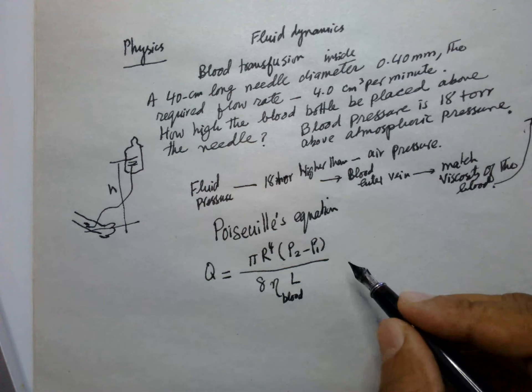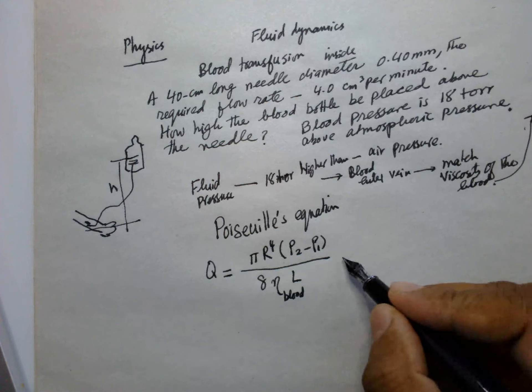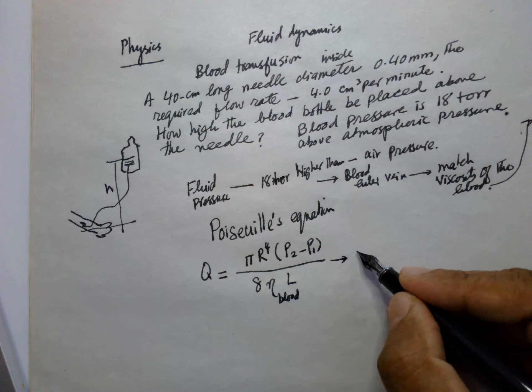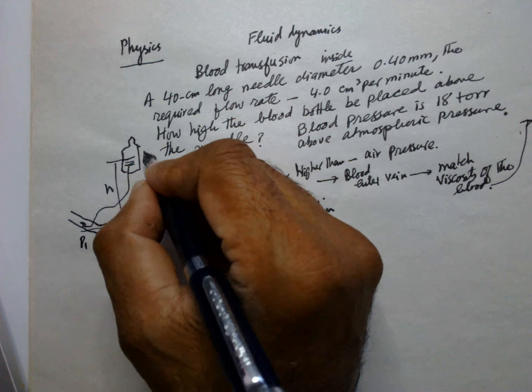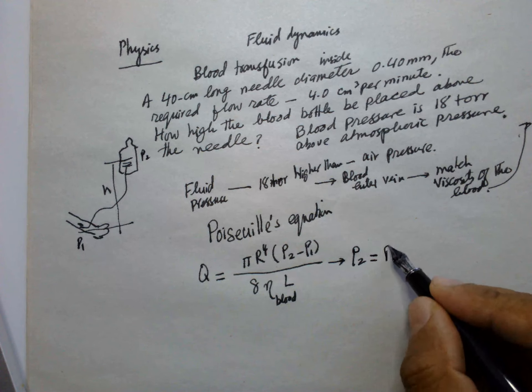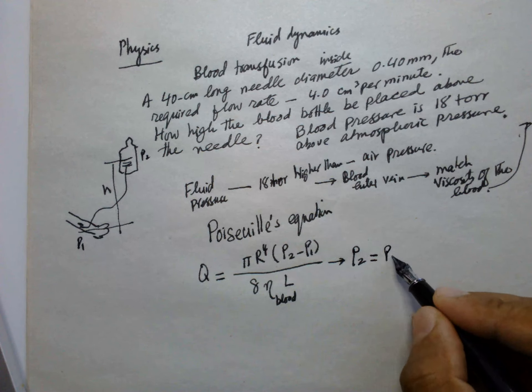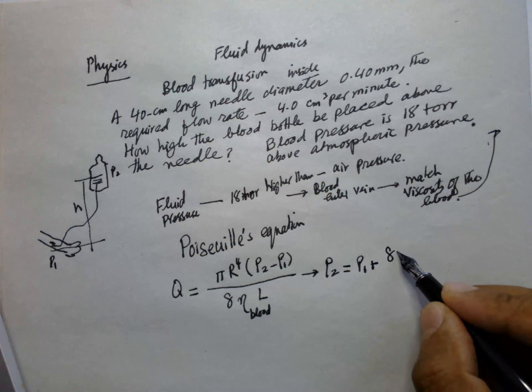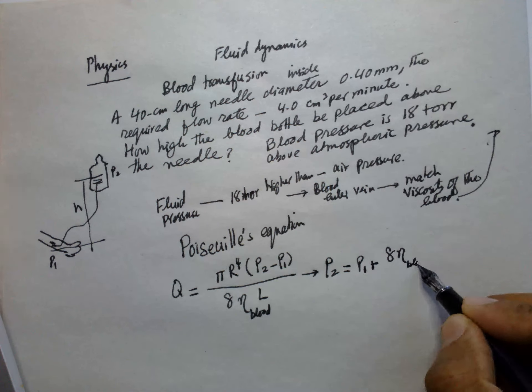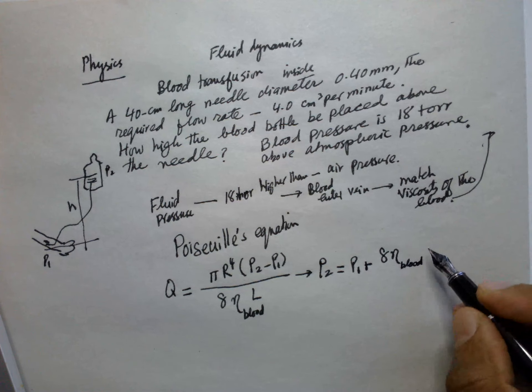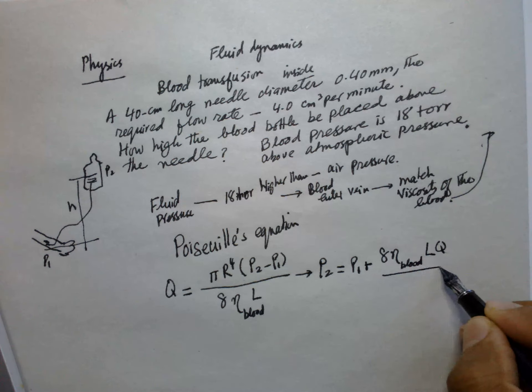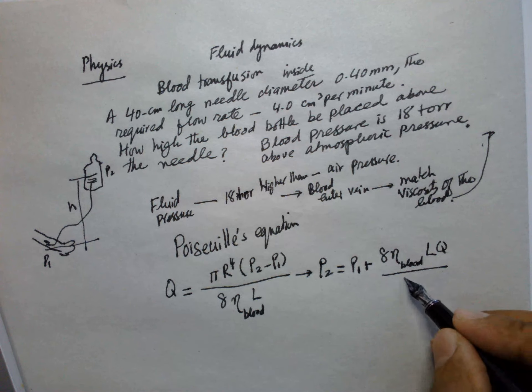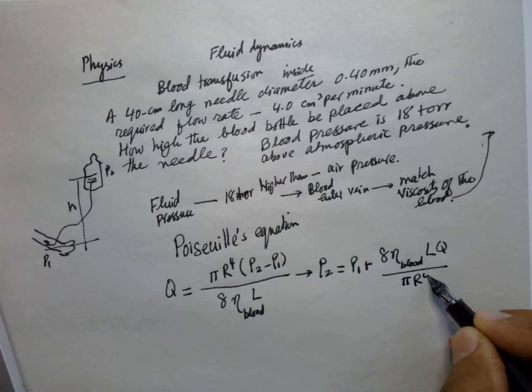So from here we can find out the pressure. This is P₁ and this is P₂. P₂ is equal to P₁ plus 8ηL·Q divided by πr⁴.